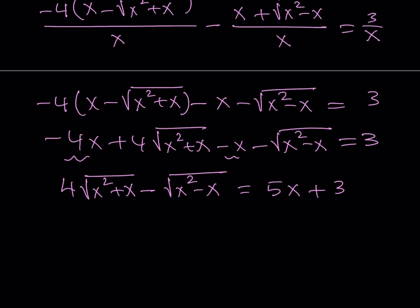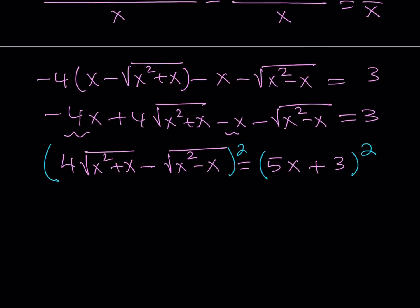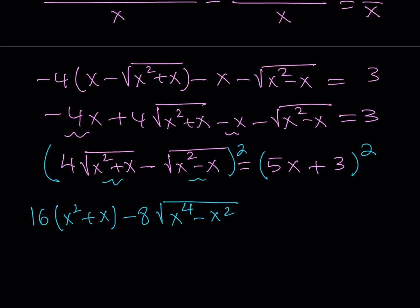Now let's go ahead and square both sides here. If we do, we're going to get rid of some of the radicals, but we have to do that one more time if you want to get rid of all the radicals. But I'm going to be using a more radical approach here. Let's continue. This gives us 16 times the quantity x squared plus x minus 8 times... Now I'm going to be multiplying these two radicals and they're conjugates. So the product is going to be x to the 4th minus x squared under the radical.